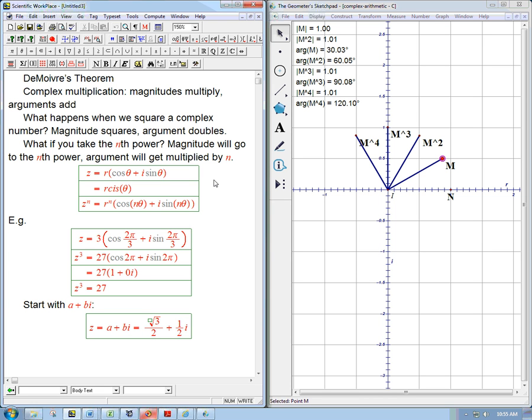Here's a continuation of DeMoivre's Theorem. I want to do an example where we don't start with something in polar form. That's the easy version, even though it looks complicated. We start with a complex number, let's say z equals a plus bi, and let's say it's root 3 over 2 plus 1 half i.